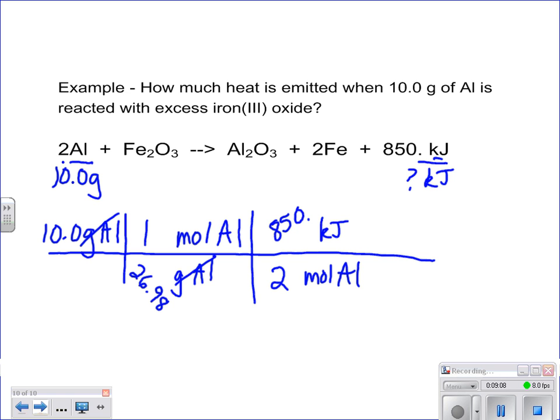So the key here, again, this is exothermic. So what that means is that my delta H is going to be a negative value. So instead of just writing 850, I'll probably have more success with this problem if I write negative 850.